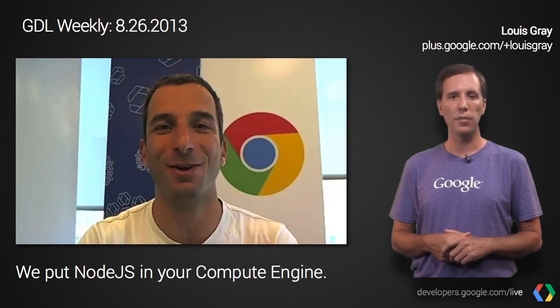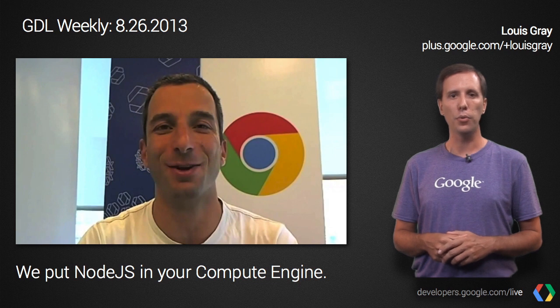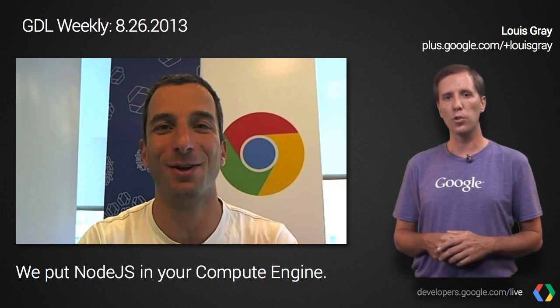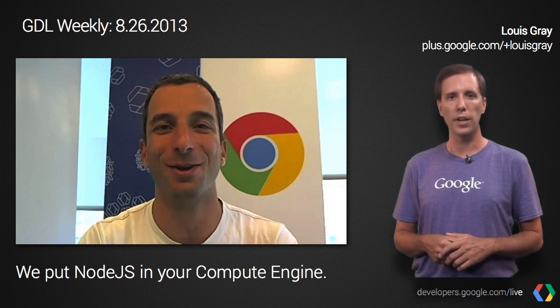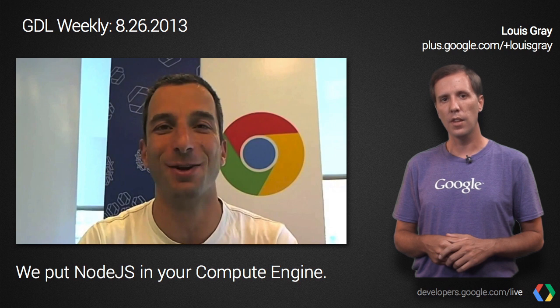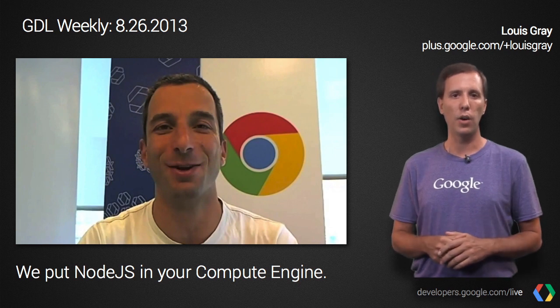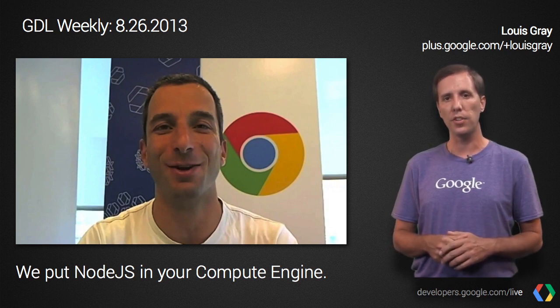Every single week, our team from Tel Aviv takes a deep dive into the world of APIs or hosts experts from the world of web and mobile. This Wednesday, Ido Green showed how you can leverage the power of Node.js on Google Compute Engine to pull information from the Yahoo Finance API and work with that data in Google Docs. This is just another cool example of how open standards can help different companies' systems work together.